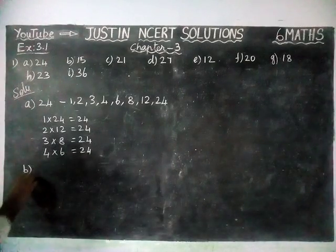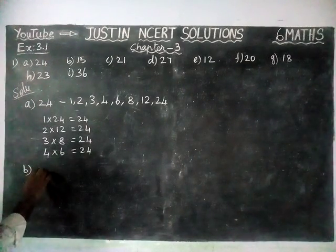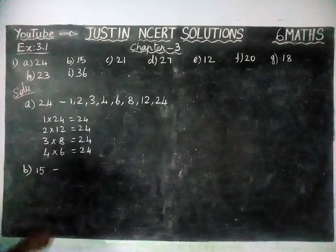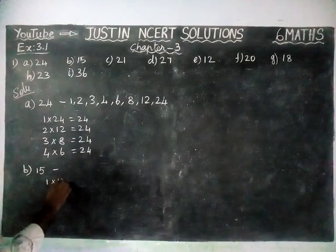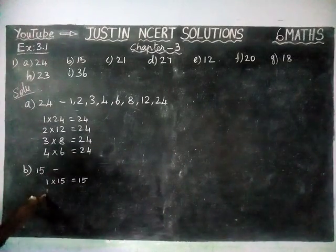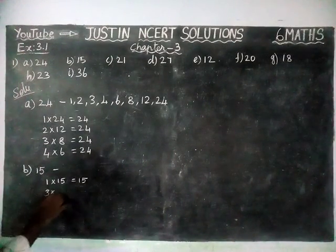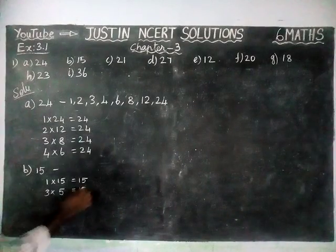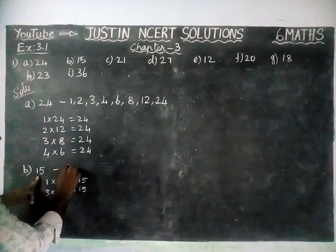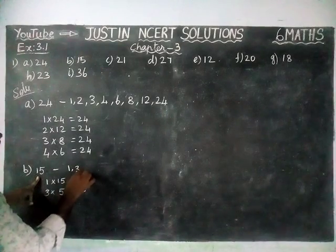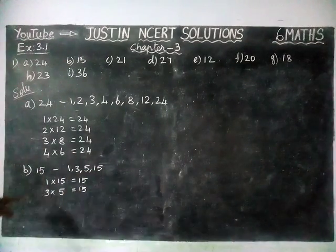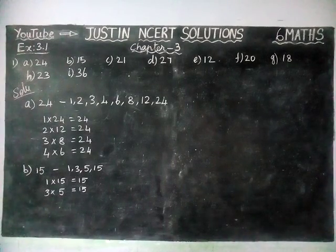Next, option B: we are going to find all the factors of 15. Factors of 15 are: 1, 3, 5, and 15.